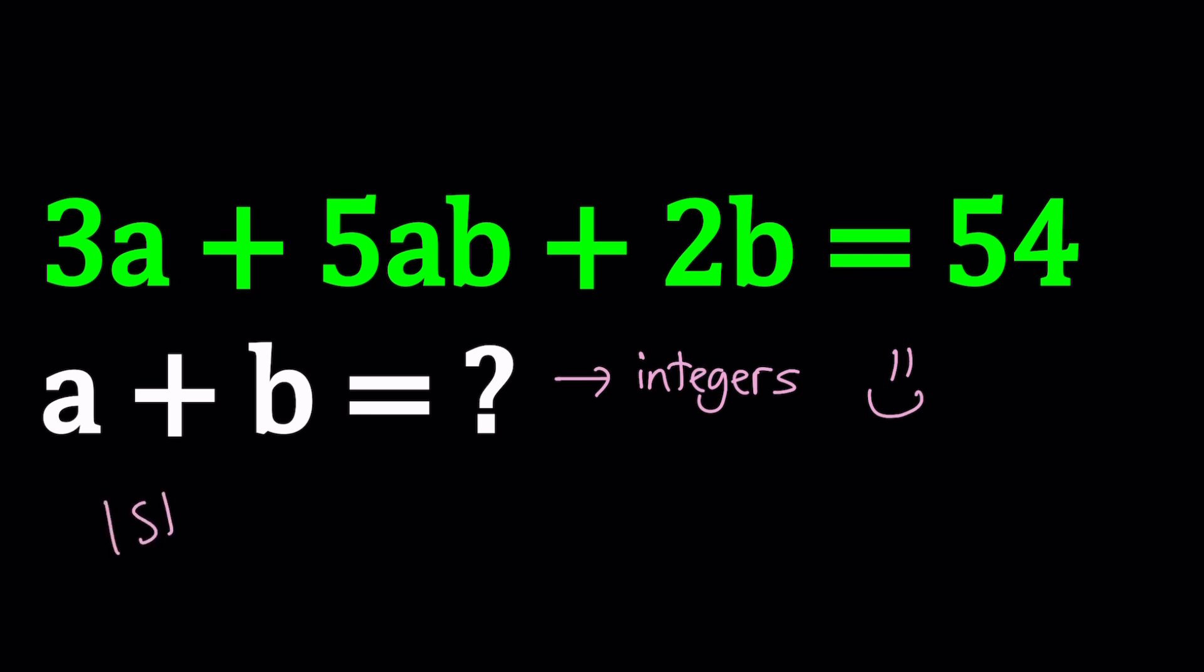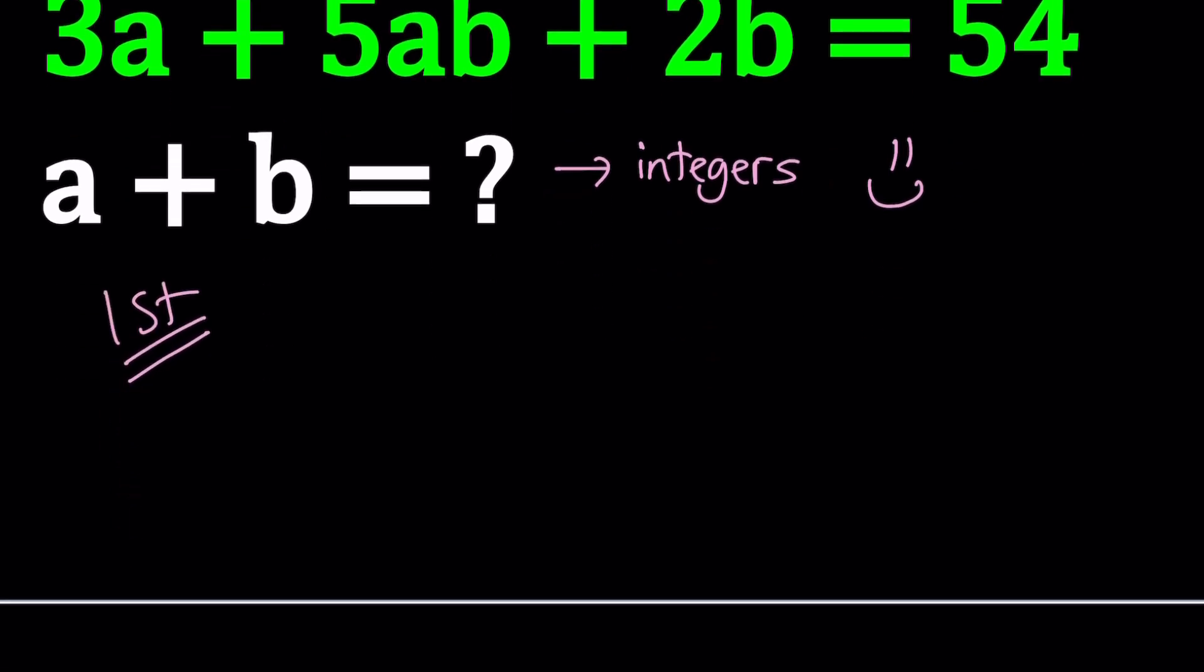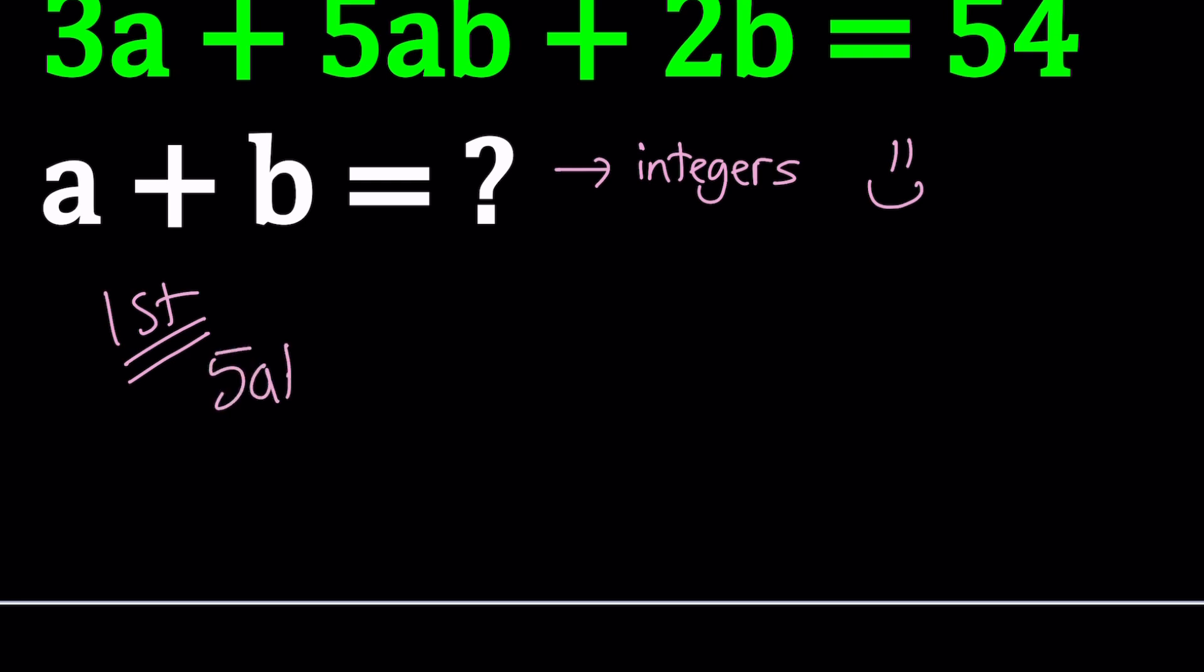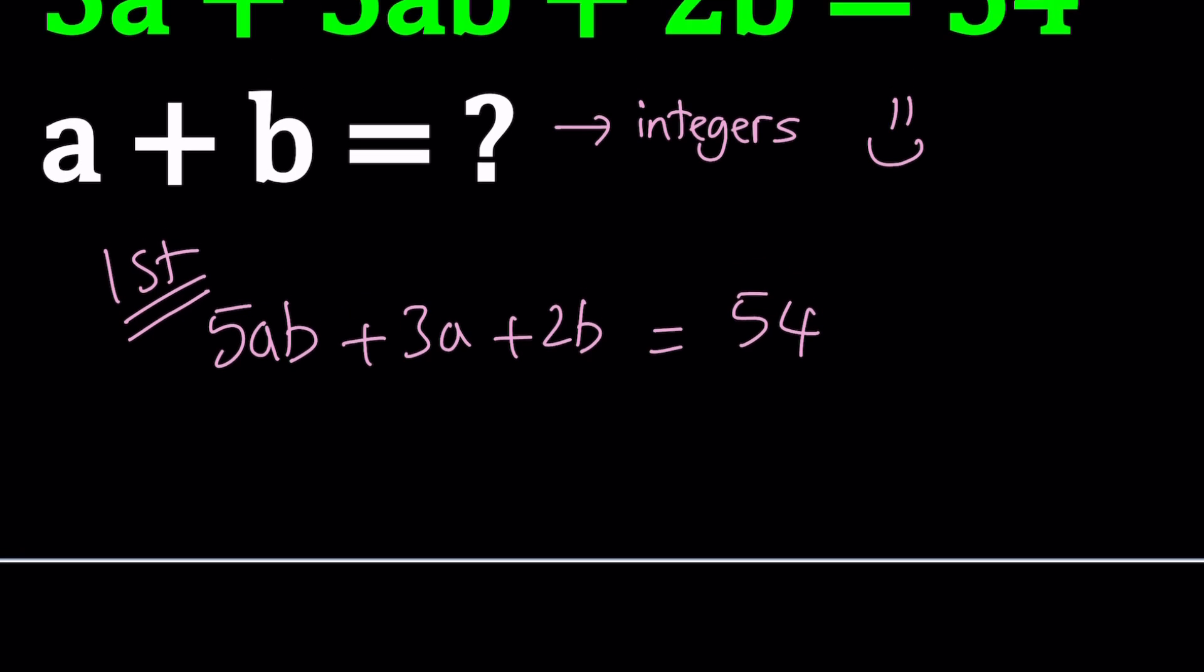First method. So I'm going to go ahead and write the product first: 5ab + 3a + 2b equals 54. Now for these kinds of problems, we have a trick called Simon's favorite factoring trick, which is SFFT. And to be able to use that, we factor by grouping. This doesn't always work nicely for this particular problem because of the coefficients. We need to manipulate a little bit, but I'll show you how we can do it in two different ways.